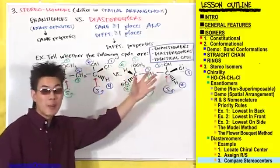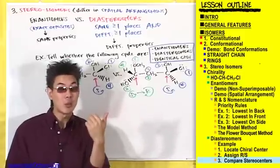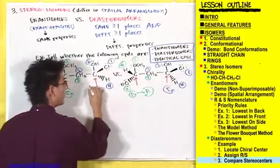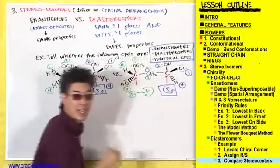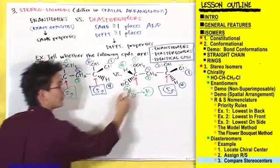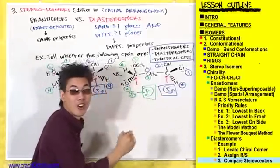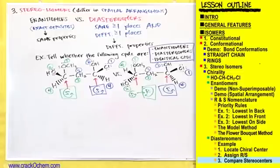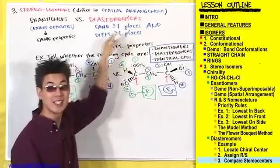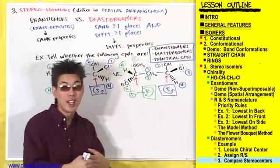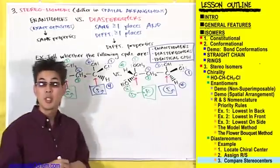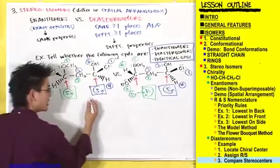Comparing the stereocenters of these two compounds, you'll notice they are the same at one place and different at another. At one stereocenter both compounds are S and S, but at the other stereocenters this compound is S while the other compound is R. If you're the same at one place and different at another, you're considered diastereomers.